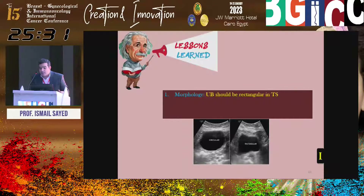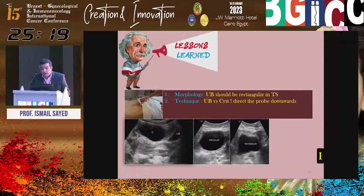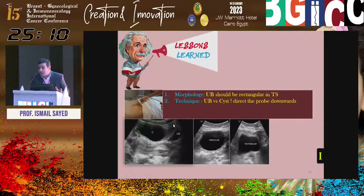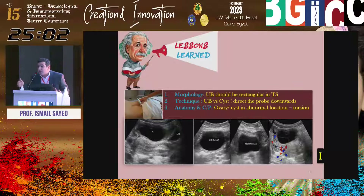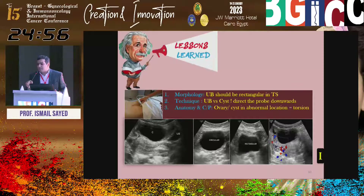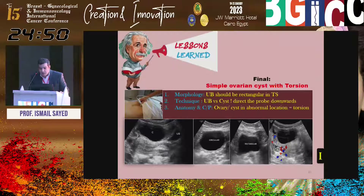Lessons from this case: revise basic morphology. The urinary bladder in transverse view should overlie the vagina and be seen inferior, behind the symphysis pubis, not above. Ovarian cyst or ovary should be to the side of the uterus — never anterior, never superior. Posterior location may have another differential diagnosis.